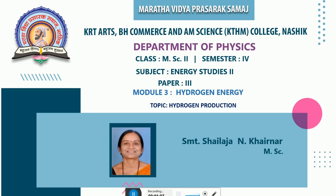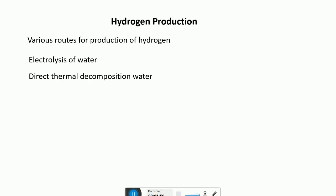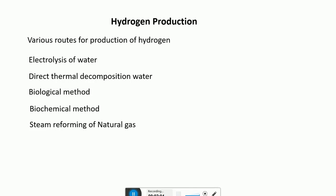Other methods of hydrogen production include biomass gasification, methane pyrolysis, and electrolysis of water. The production of hydrogen plays an important role in industrial society because hydrogen is required for many chemical processes and it can be used as a fuel in transportation. There are various routes for the production of hydrogen such as electrolysis of water, direct thermal decomposition of water, biological method, biochemical method, and steam reforming of natural gas.